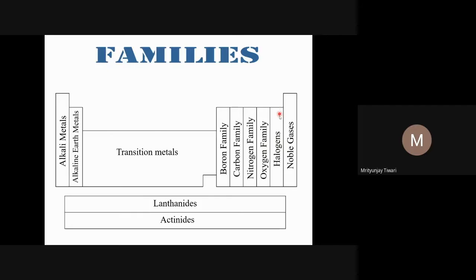Halogens are group 17 elements, chalcogens are group 16 (oxygen family), and pnictogens are group 15 (nitrogen family). What is very important is that all three other blocks — S-block, D-block, and F-block — contain only metals. The P-block is the only portion of the periodic table that contains non-metals and metalloids in addition to metals.